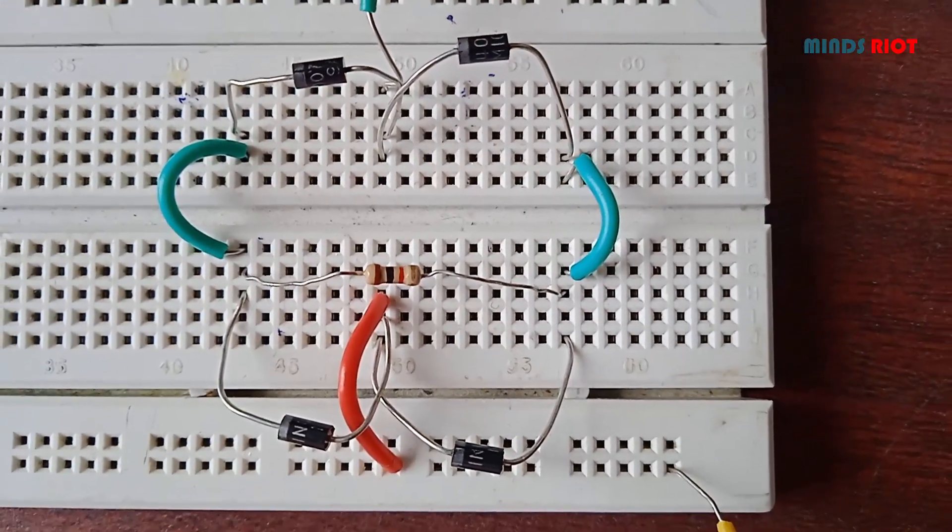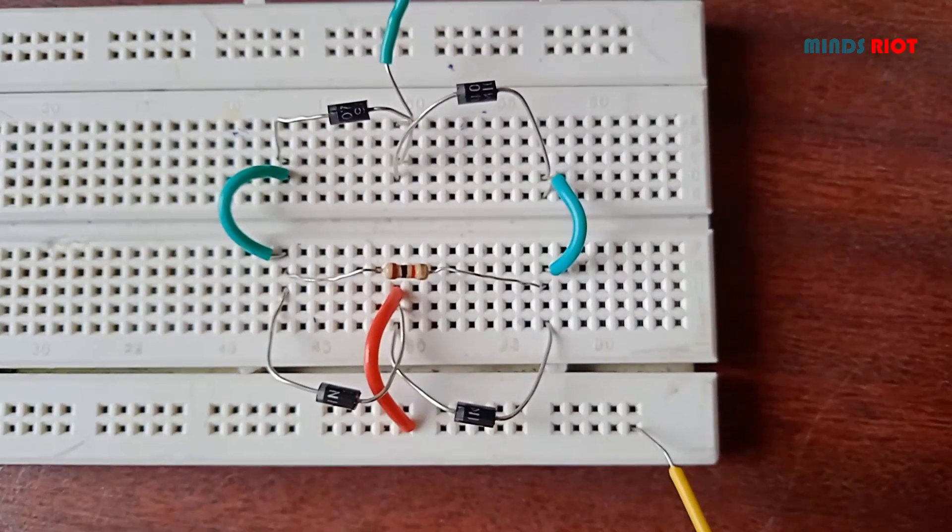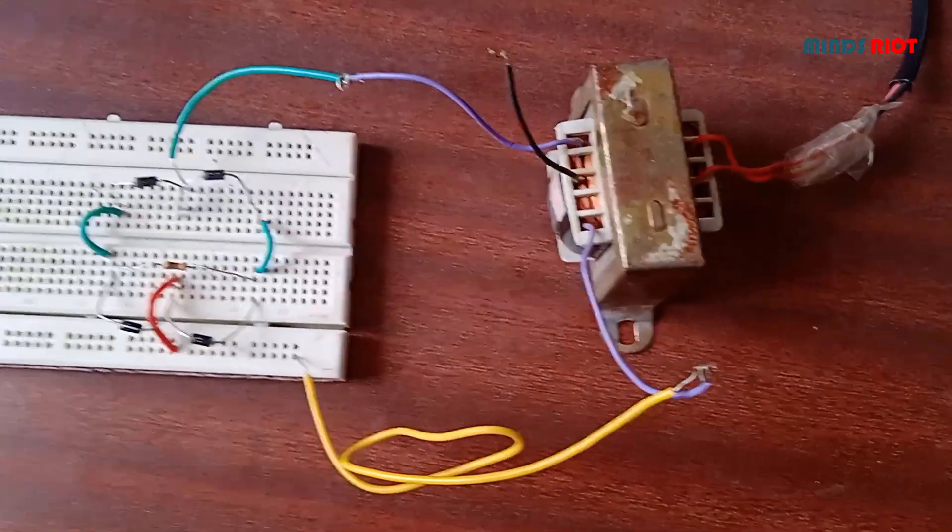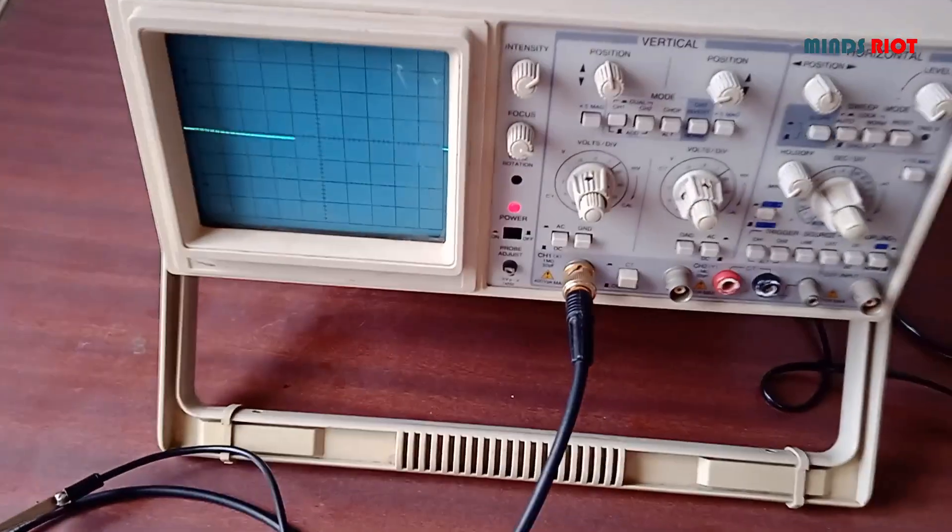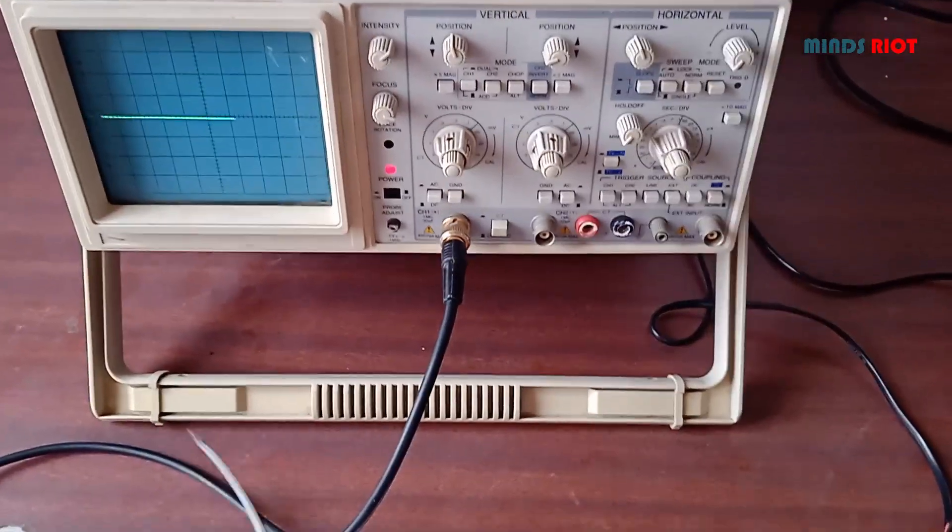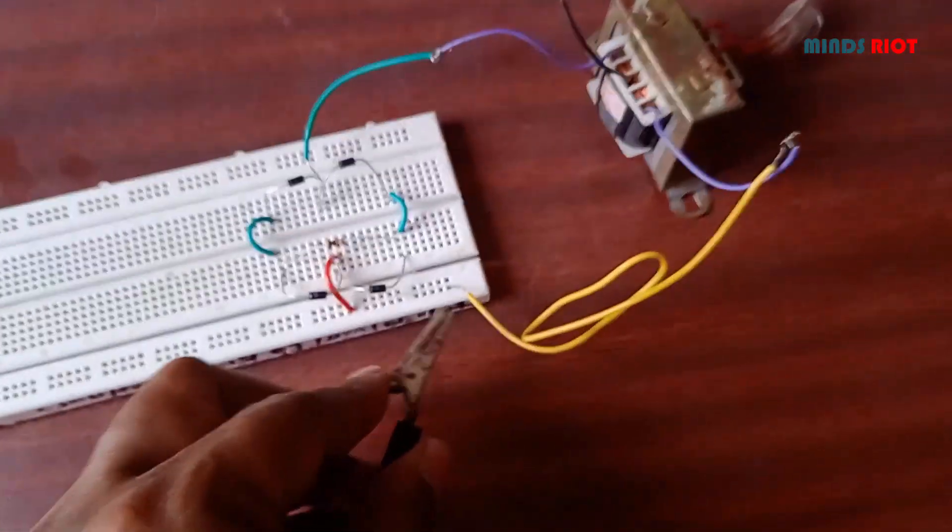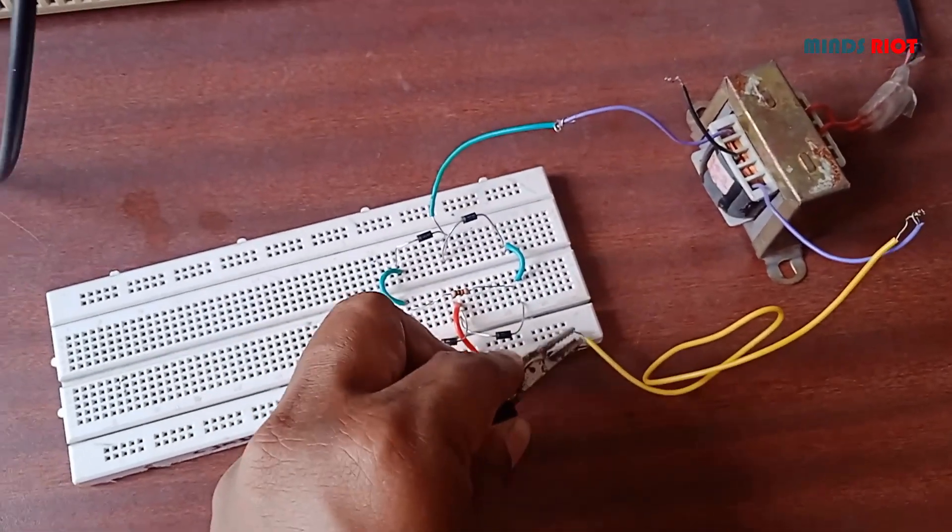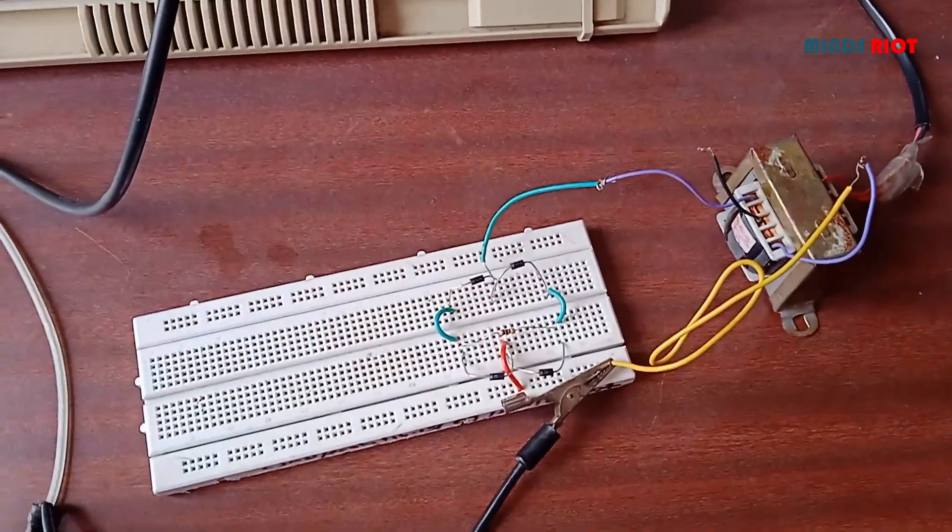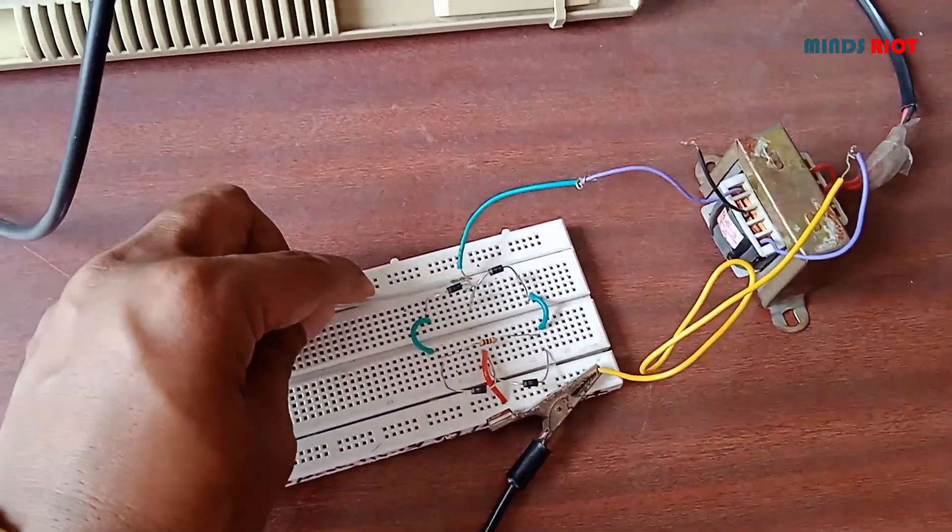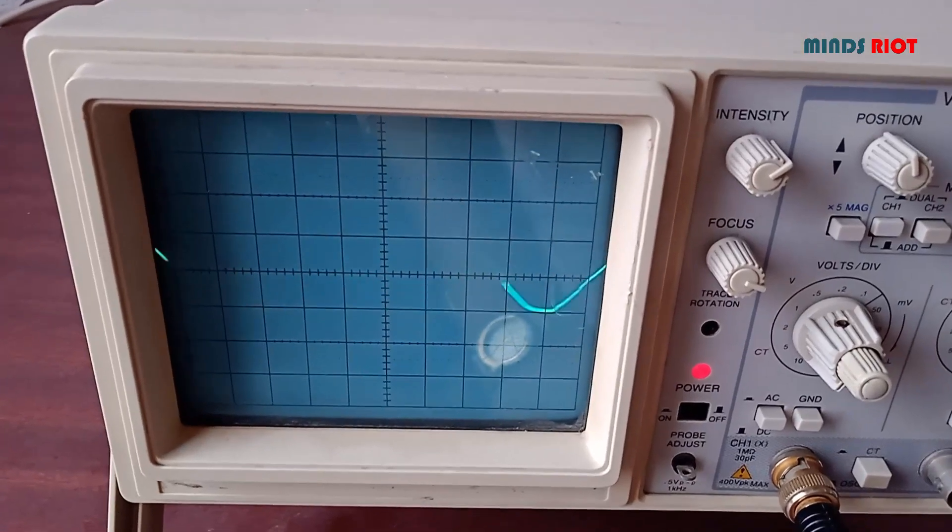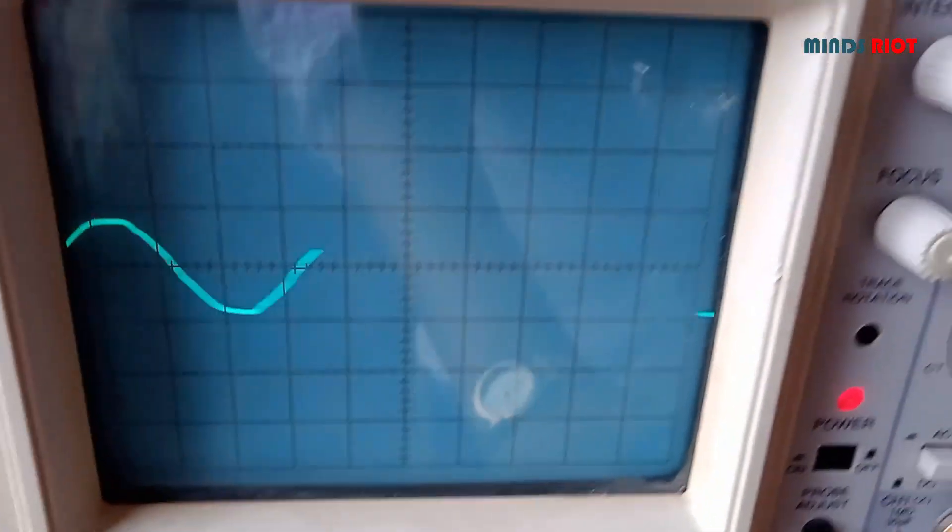Now this is the circuit of bridge rectifier. Now first, input waveforms. To observe the input waveform we must connect the CRO probe across transformer. See there is AC waveform on CRO.